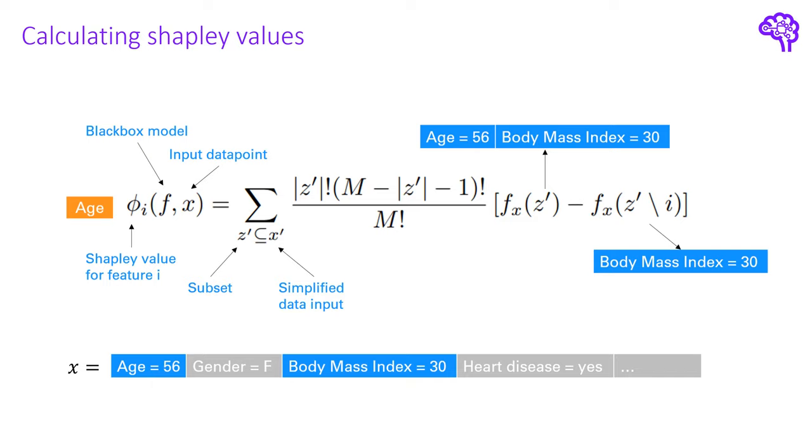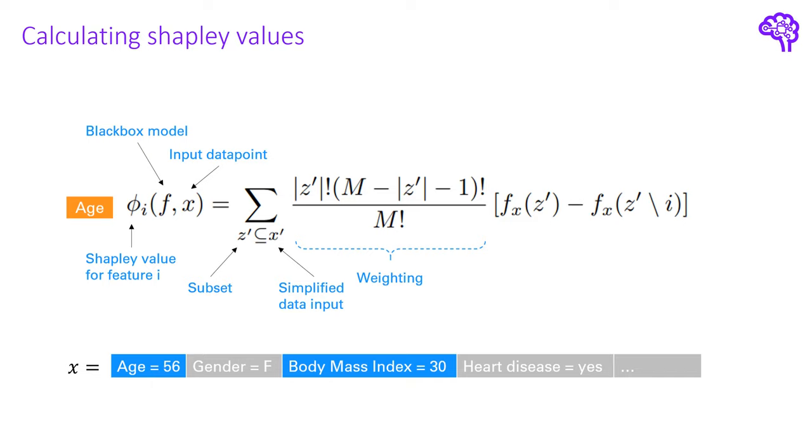And then we do this for each possible combination, so each permutation of subsets. Each of those is additionally weighted according to how many players are in that coalition. Or in other terms how many features of the total number of features are in the subset.